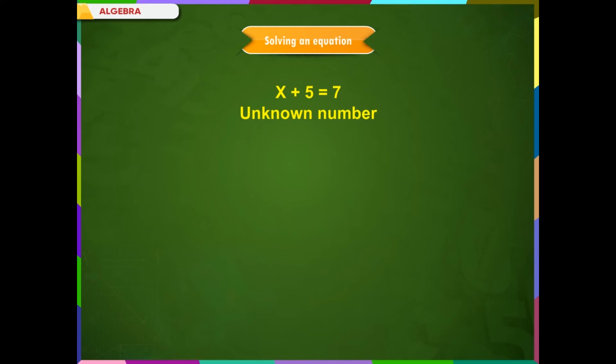Solving an equation. We know that in an equation, alphabets stand for an unknown number. To solve an equation means finding the value of this unknown number. When we put this value in place of the variable, it makes the equation true.